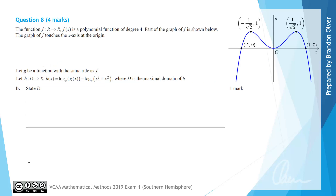Next the question introduces g, which is the function with the same rule as f. We also let h be the function with domain d, where h of x has the rule log base e of g of x minus log base e of (x cubed plus x squared). For part b we're asked to state d, the maximal domain of h.